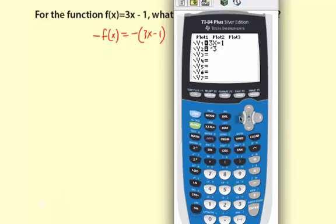So negative, open parentheses, and then 3x minus 1. Just like that. Let's take a look at the graph.